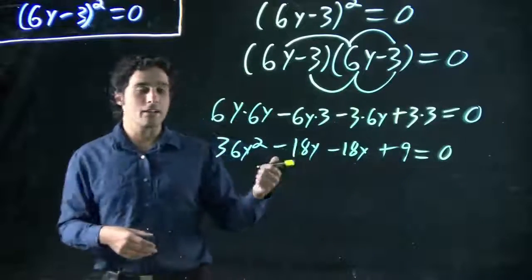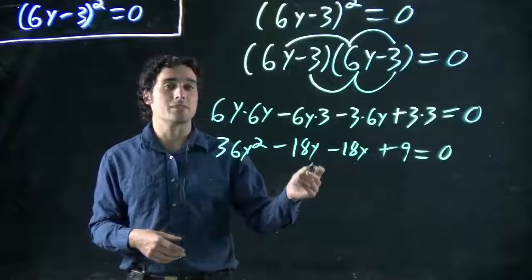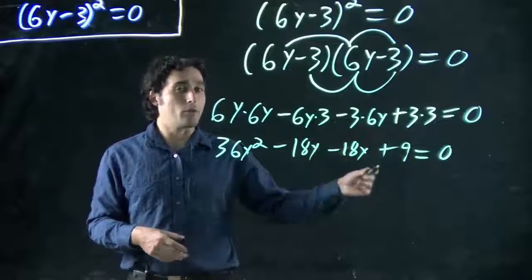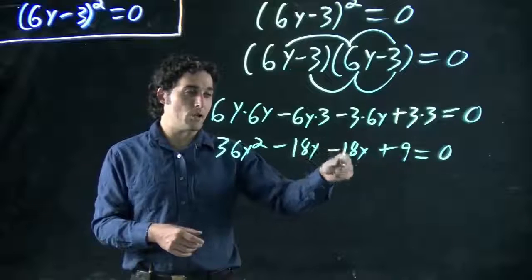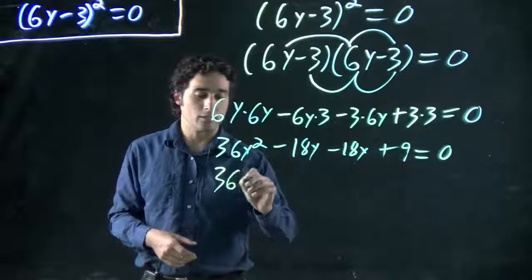And now, again, we combine certain terms. What terms can we combine? Only those with variables to the same power. Same variable, same power. X and Y would not be able to be combined, but 18y, 18y can.